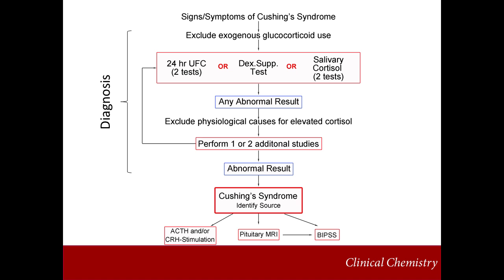Once a diagnosis has been made, additional investigation may be done to identify the source of the defect. With ever-improving imaging techniques, an MRI may be sufficient to identify the source of the defect in Cushing's syndrome, be it an adrenal, pituitary, or ectopic source. However, in the case of uninformative imaging results, additional laboratory evaluation can be beneficial.